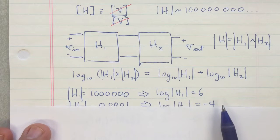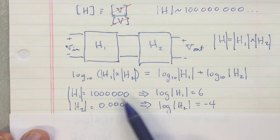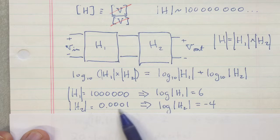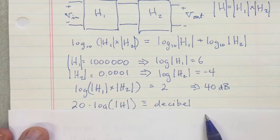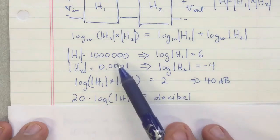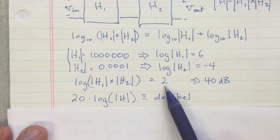The other advantage of taking the logarithm is that the numbers are much smaller to deal with. So the log of a million is just six, the log of one ten-thousandth is just minus four. And so if we take the log of a system that consists of these two in series, then we're going to just get six minus four, which is two.